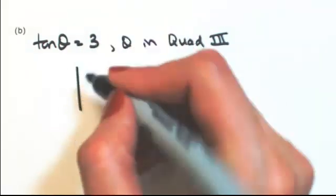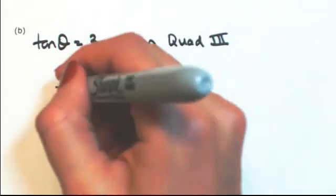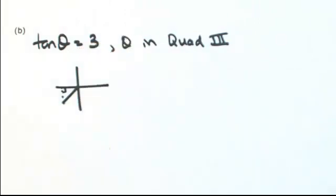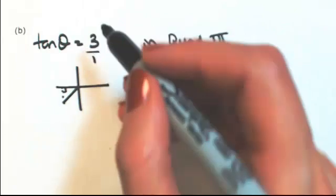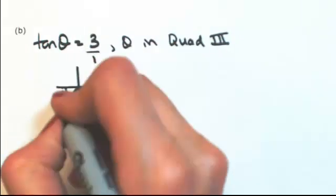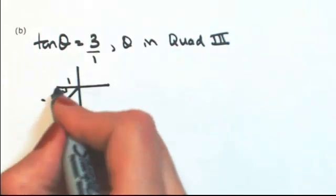So I'm going to draw my triangle in quadrant 3. Extend that back to the x-axis to make a right triangle. So tangent is opposite over adjacent. So the opposite is going to be 3, the adjacent is going to be 1, but take a look at where you are. Because you're in the third quadrant, x and y are both negative.